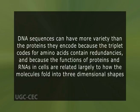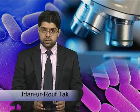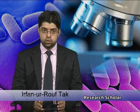DNA sequences can have more variety than the proteins they encode because the triplet codes for amino acids contain redundancies, and because the function of proteins and RNAs in cells relates largely to how the molecules fold into three-dimensional shapes. Slight differences in the DNA sequence encoding these molecules can arise without altering their shape significantly and thus without affecting their function. Over evolutionary time, organisms very slowly accumulate changes in the sequences of the genes that encode parts of the ribosome. Any large rapid change is unlikely to survive because the ribosome is so critical to all aspects of life and reproduction.